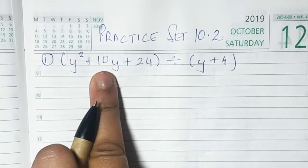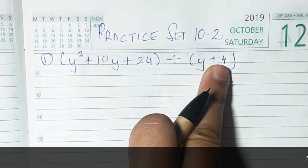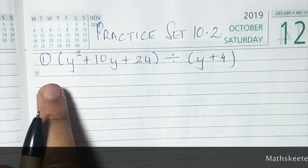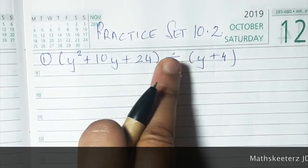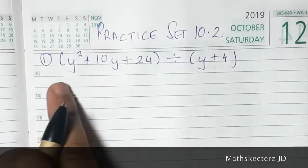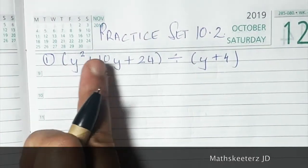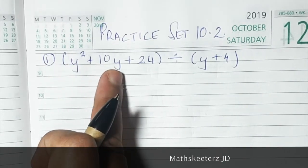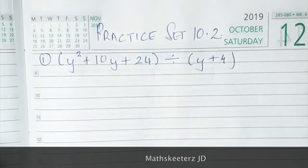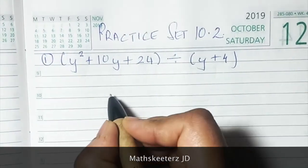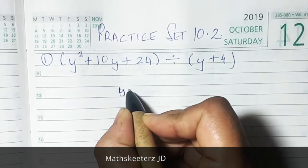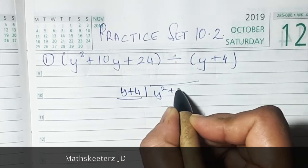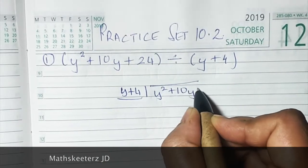The first sum is y² + 10y + 24 divided by y + 4. It is arranged properly — we have the square first, then y, so it's in proper order. If it were not arranged, we would have to put the highest degree first, that is y² first, then 10y. Since it is already arranged, let's begin and write it in the division pattern: y + 4 here, and y² + 10y + 24 inside.